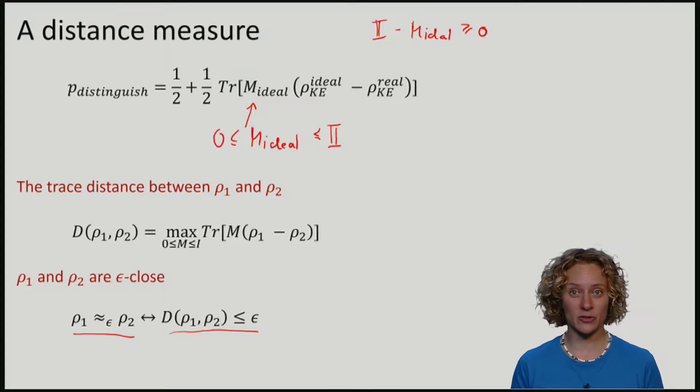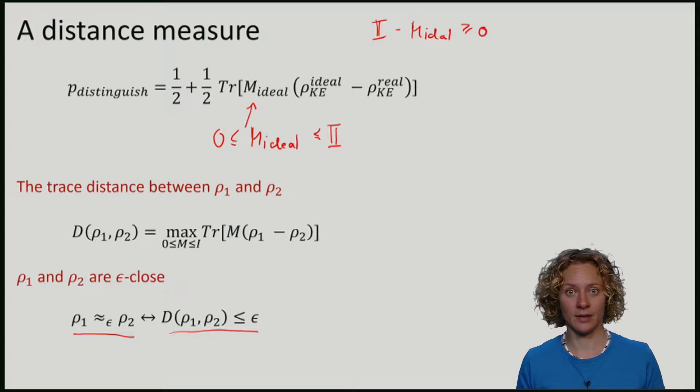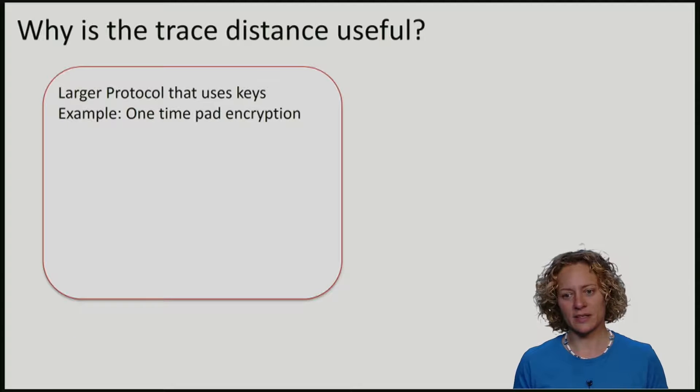Why is the trace distance so useful for cryptography? There might be all other kinds of measures of closeness. We are always in a scenario where we usually embed a protocol in a larger context. For example, we might have a larger protocol that actually wants to use keys that Eve is ignorant about. For example, in the one-time pad we needed such keys.